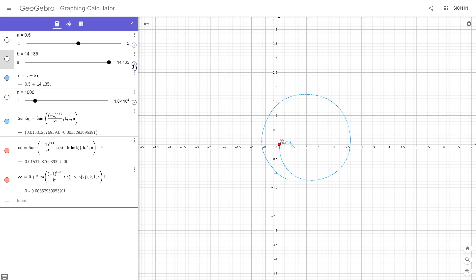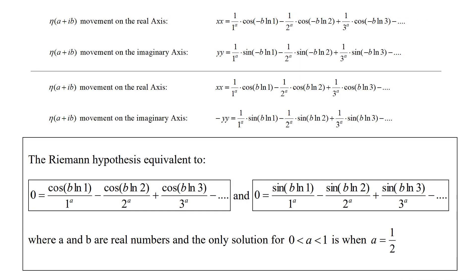This animation only used the first 1000 steps of the eta function, which is not even close to infinity, to say the least. What I want to show is that the Riemann hypothesis is equivalent to the following statement: when the movement of the eta function on the real axis equals zero and the movement on the imaginary axis equals zero as well, where a and b are real numbers, the only solution for a between zero and one is when a is equal to one-half.